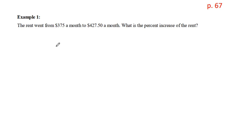For example, when the rent went up from $375 to $427.50, the question is asking us for the percent of increase of the rent. The first thing we're going to do is subtract $427.50 minus $375. And when we do that, we're going to get an increase of $52.50.